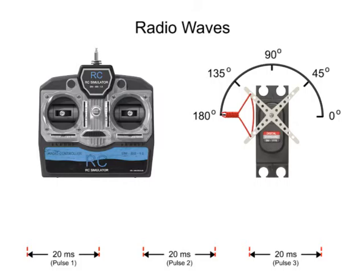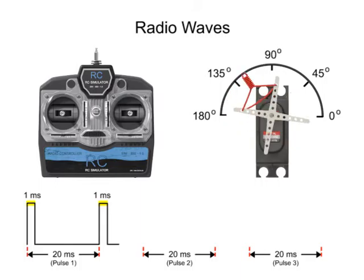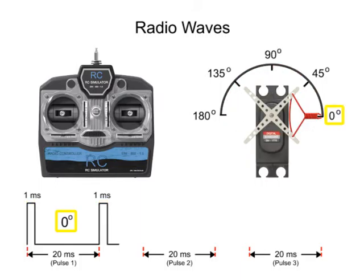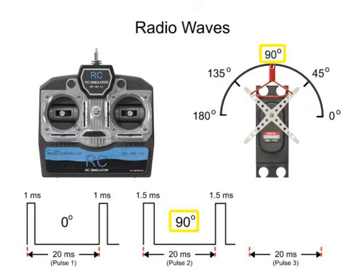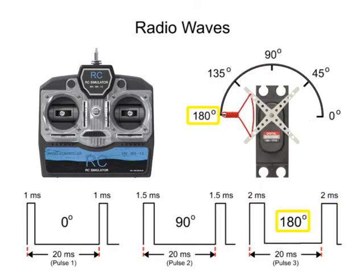For example, if the pulse is high for one millisecond, then the servo horn position can be programmed to be at zero degrees. If it is 1.5 milliseconds, it is set to the center, or 90-degree position. If the pulse signal is 2 milliseconds, then it can be instructed to go to the 180-degree position.